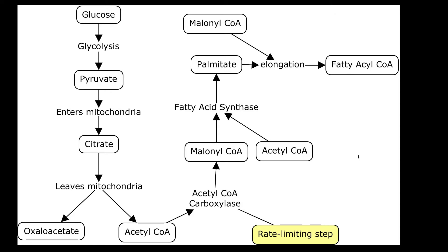So we're going to do fatty acid synthesis, and the first thing you're probably noticing is that this concept map looks way smaller than the ones we normally do. The reason for this is when it comes to personality types, I'm an N, intuitive, and so I'm pretty good at figuring out big picture stuff but struggle with the details. So I decided to do an extra concept map for each subject — the normal one with all the details, and one of these that maybe helps the sensing types out because it focuses on the big picture stuff.